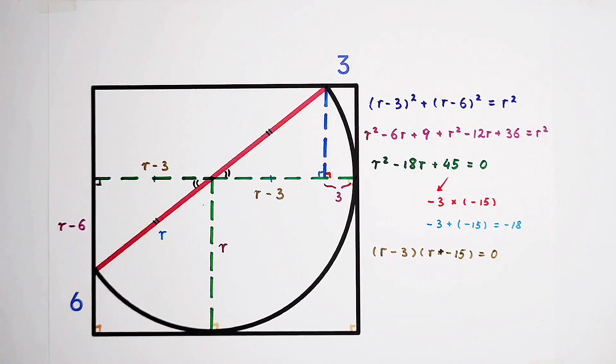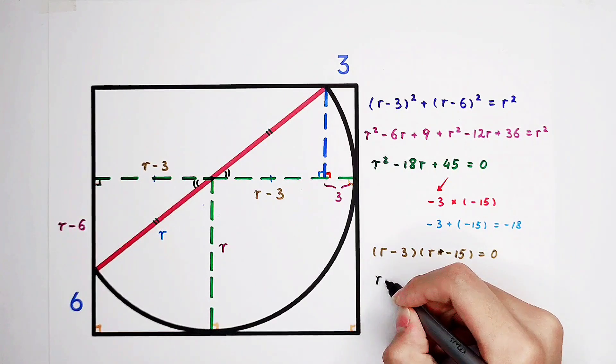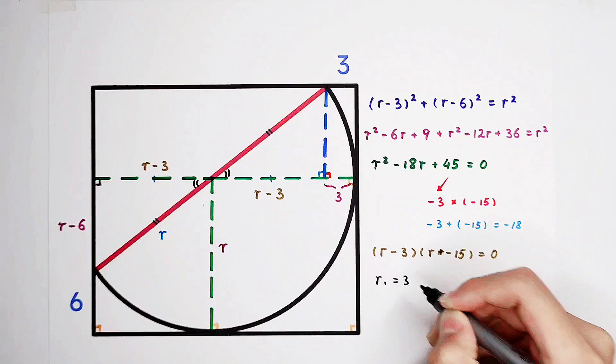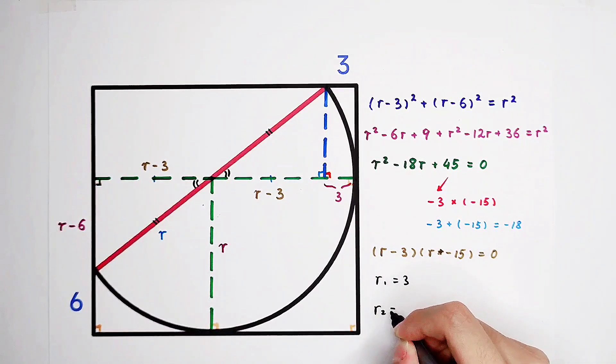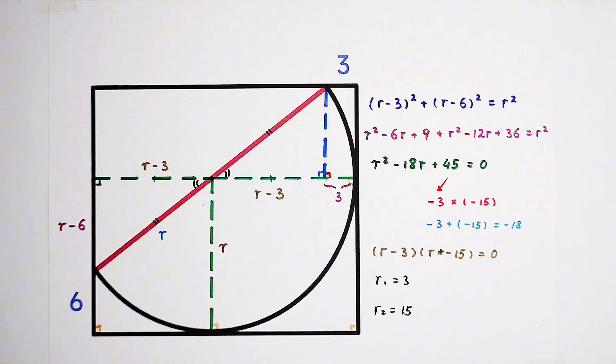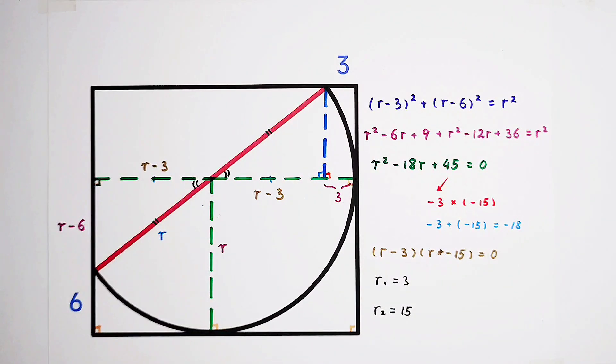So the right-hand side is 0. Of course. How many cases can we get? 2. Of course, 2. R1 is 3. R2 is 15. The diameter is... Oh, two answers. Is that possible? Of course not. So which one is correct, and which one is incorrect?